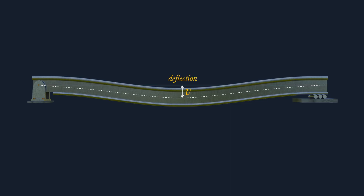We're going to denote deflection by the letter V. The dotted line that you see is a curve called the deflection curve. If we take a tangent, we can find the angle of rotation, which is theta, which helps us determine by how much the beam has rotated from its original position. Now you know what deflection and angle of rotation are.